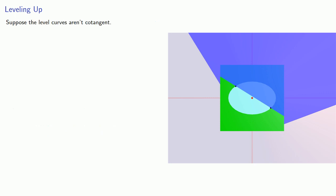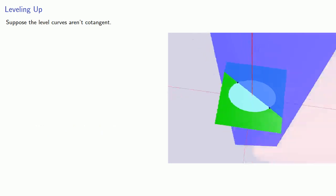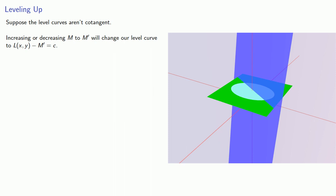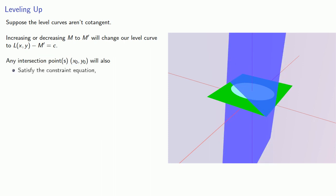Now suppose our level curves aren't cotangent. Then increasing or decreasing m to some other value m prime will change our level curve to L of xy minus m prime equals c. And just as before, any intersection points will also satisfy the constraint equation and correspond to an objective function value of m prime plus c. And what this means is that if our level curves aren't cotangent, higher and lower values of the objective function will be possible.